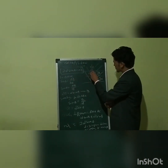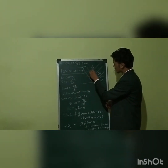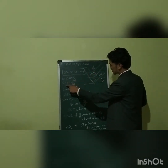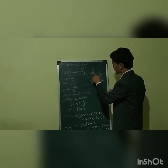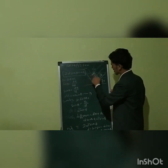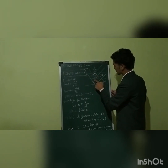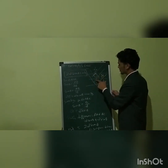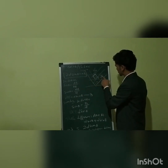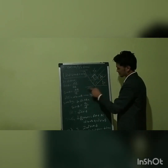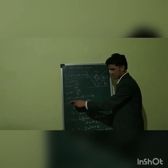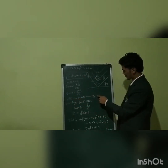In triangle AOB, sin theta equals perpendicular over hypotenuse, which is AB divided by OB. Since OB equals D, sin theta equals AB over D, giving AB equals D sin theta.